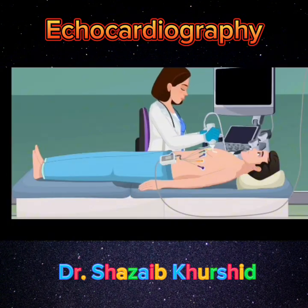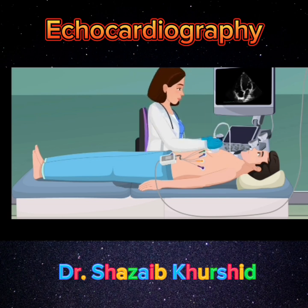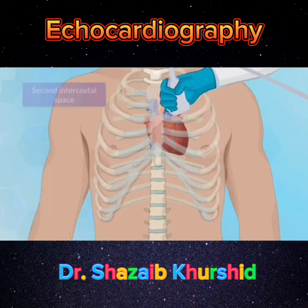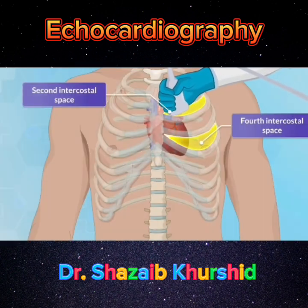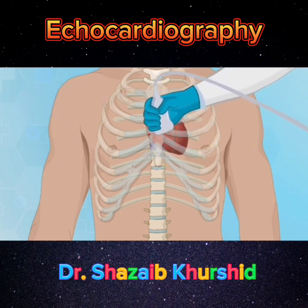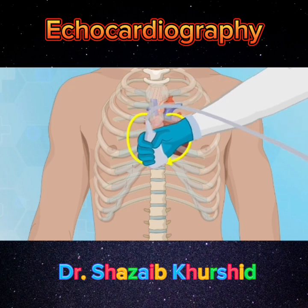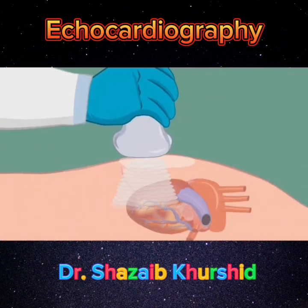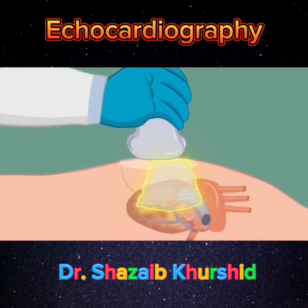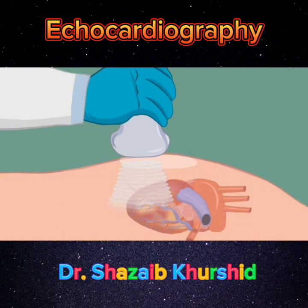The cardiac sonographer applies conductive gel over the patient's chest and places a transducer at the second and fourth intercostal spaces to the left of the sternum. The transducer is then turned clockwise or counterclockwise while emitting high-frequency sound waves that bounce off heart structures and return to the transducer.